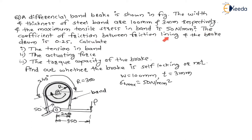The coefficient of friction between the friction lining and the brake drum is 0.25 — that is, μ = 0.25 is given data. We need to calculate the tension in the band, that is maximum tension T1 and minimum tension T2, and the actuating force P.